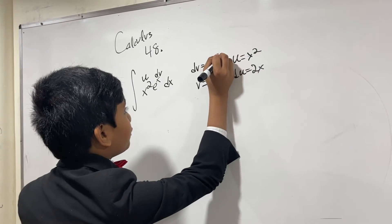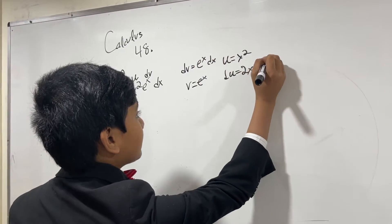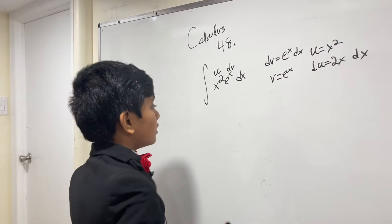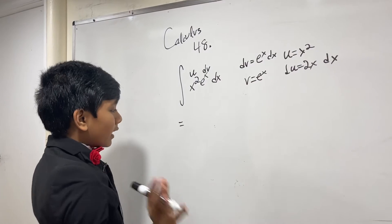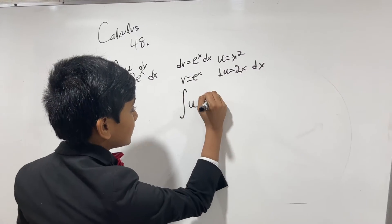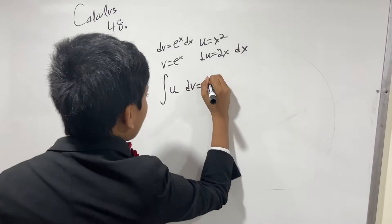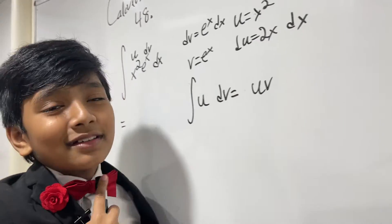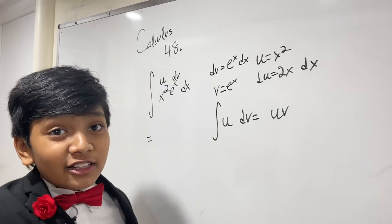So now what is this? Well, we can use the formula: the integral of u dv is equal to uv minus the integral of v du. There's a frog in my mouth today, a French frog.